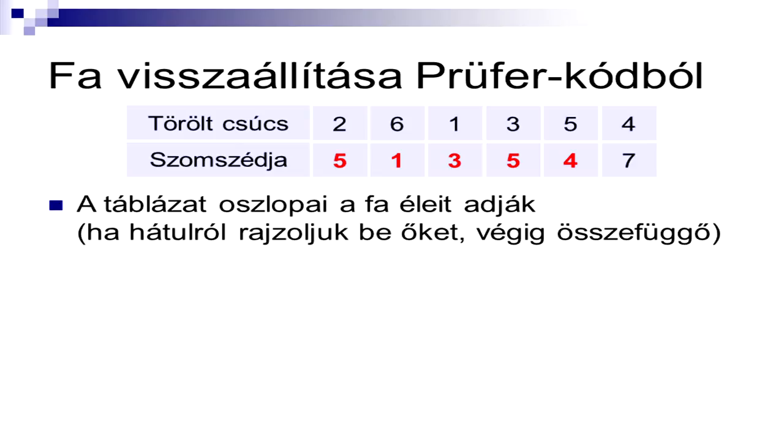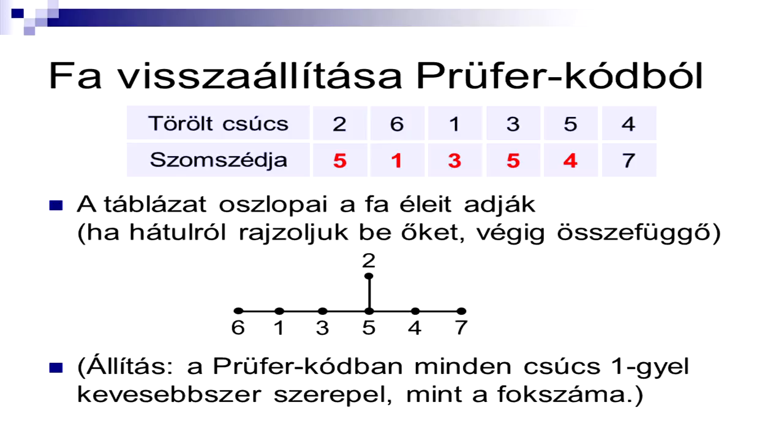Mindig tudok mit beírni, hiszen mindig N-1 mező van letiltva, azok között lehetnek itt egyformák is, tehát az N csúcs közül biztos mindig lesz olyan, amit oda tudok írni. Vagyis megkapom ezt a táblázatot, egy tetszőleges számsorozatból, és ebből visszaállíthatom magát a fát is, hiszen itt az oszlopok az éleket jelölik. Tehát ez egy olyan fa, ahol a 2-es csúcs össze van kötve az 5-össel, a 6-os az 1-essel, és így tovább. És az is egy érdekes állítás, hogy ebben a Prüfer kódban minden csúcs egyel kevesebb szer szerepel, mint a foka. Például az 5-ös csúcs harmadfokú, és kétszer szerepel a kódban, hiszen két olyan él volt, amikor egyik szomszédját letöröltük, és őt írtam le.